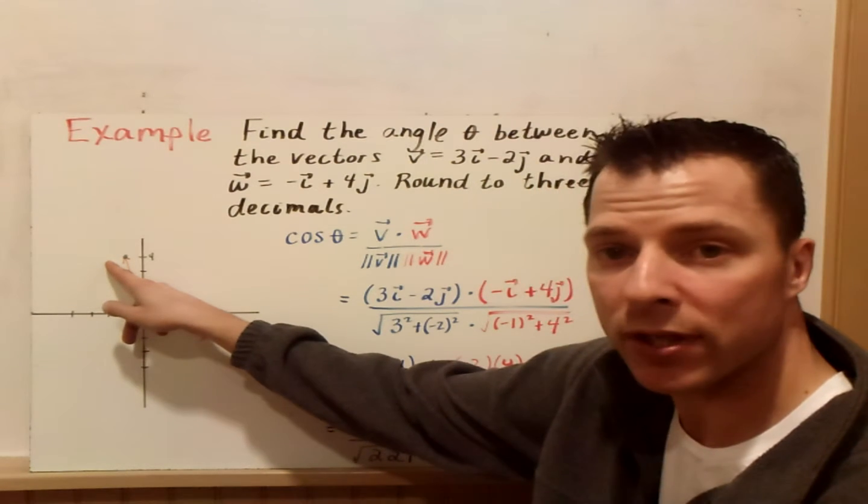So first thing you can do is draw your two vectors. So here is 3i minus 2j, right here, and the vector shooting off up here is negative i plus 4j. The idea here is we want to know how do we find that angle that's between them. What is that angle?